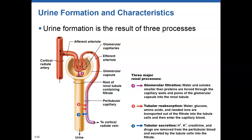Then we have tubular reabsorption, which reabsorbs anything that we didn't want to get rid of. We also have tubular secretion, where we're getting rid of materials that couldn't get through the glomerular filtration slits or didn't have a chance to get into the filtrate but that we want to eliminate.